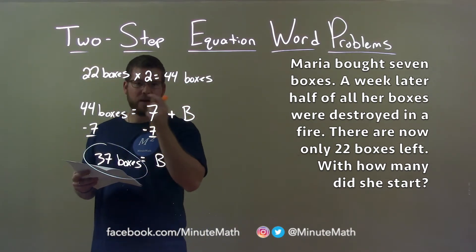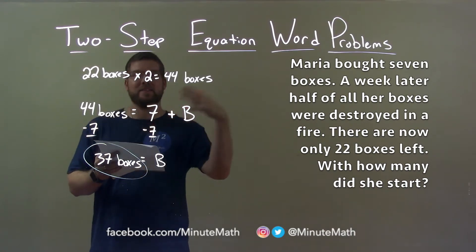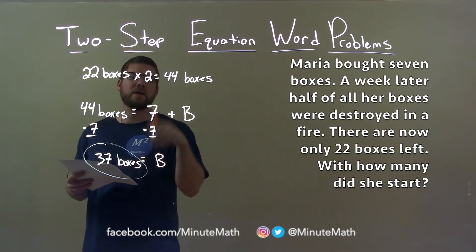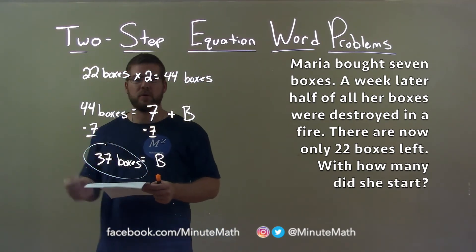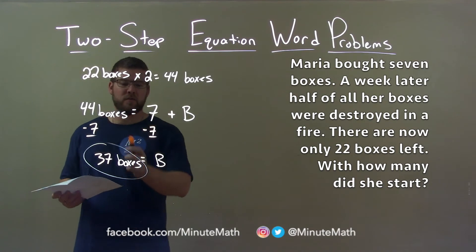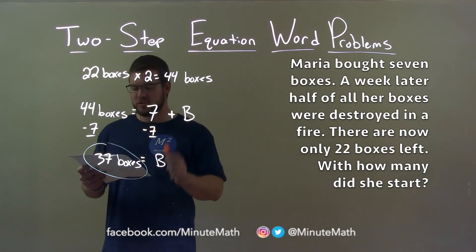Before that, she had bought seven boxes. We're going to see how much she had initially. So 44 boxes equals seven plus B, the number of initial boxes she had. Solve for B. Subtract seven on both sides, and got our final answer of 37 boxes.